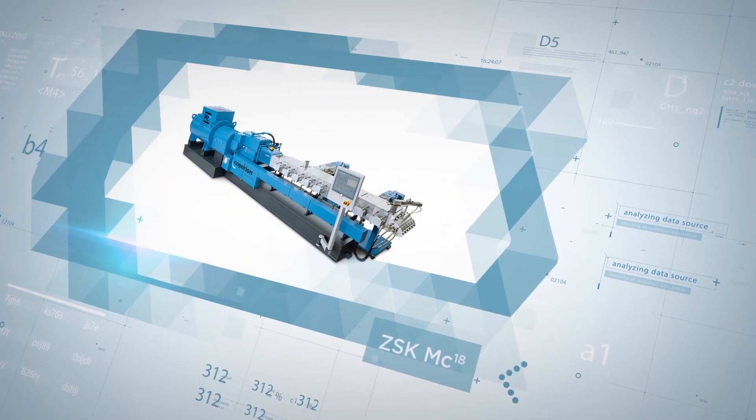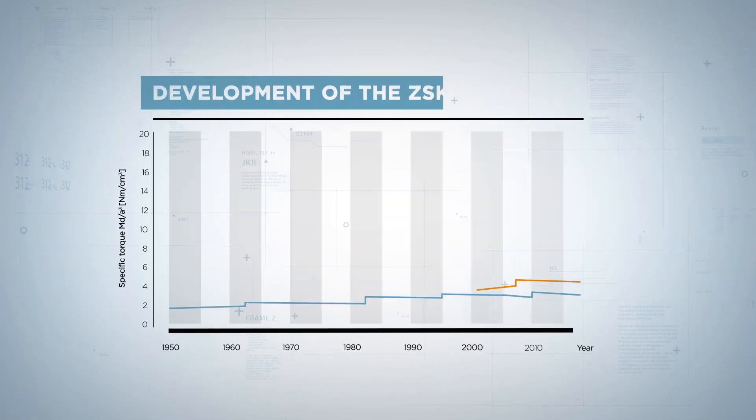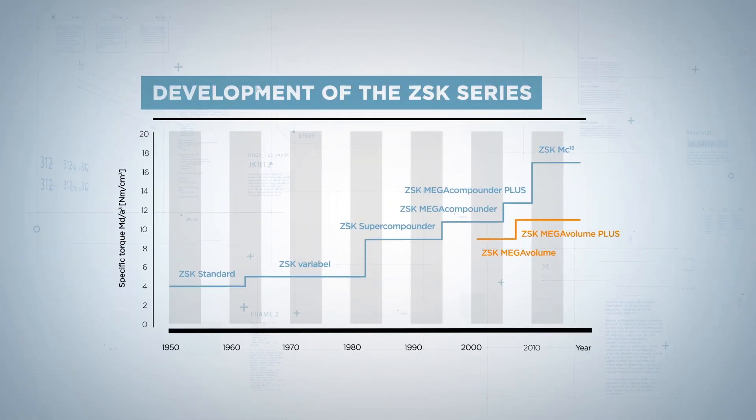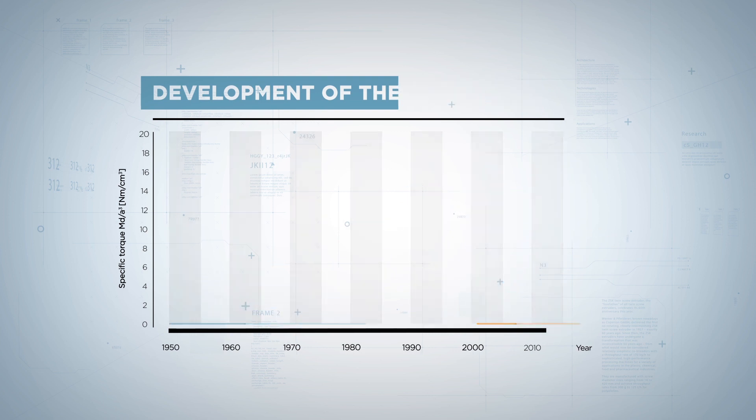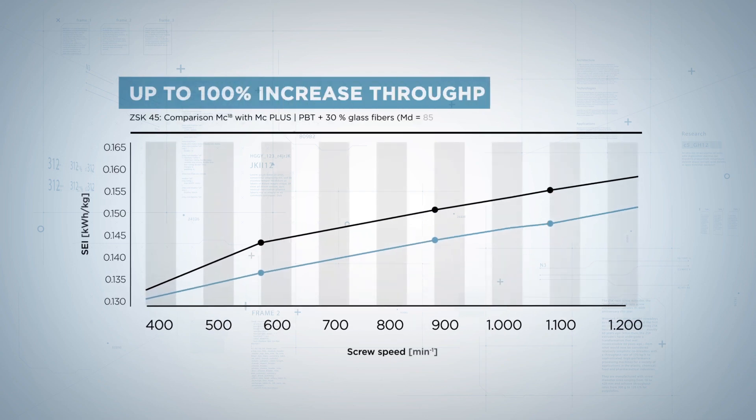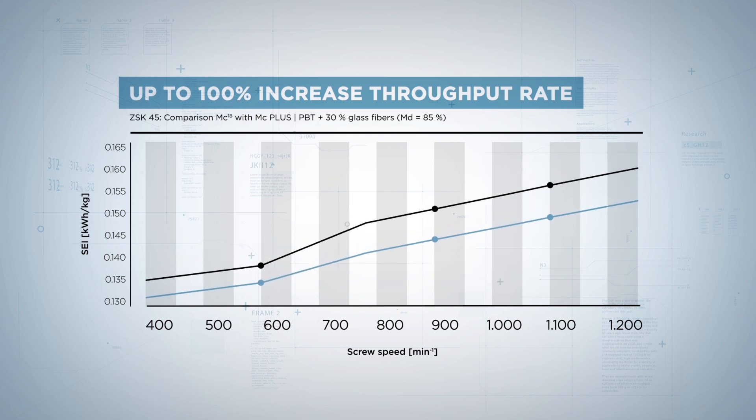With the introduction of this ZSK series in 2010, Coperion established a throughput champion for the manufacture of products with a high torque requirement. With a specific torque of 18, the ZSK MC-18 is the most powerful ZSK ever made.